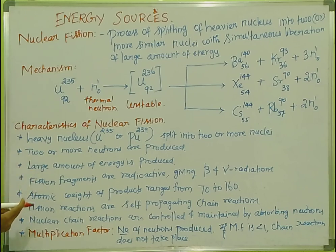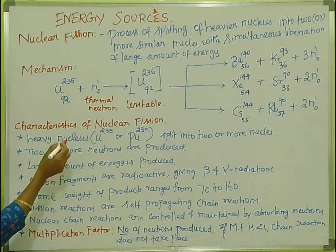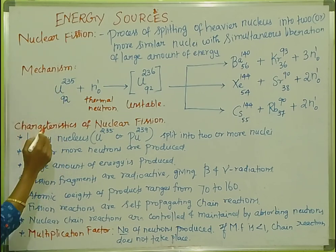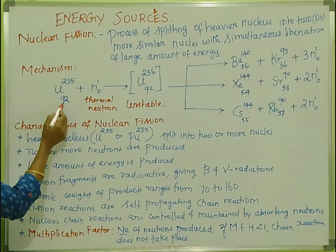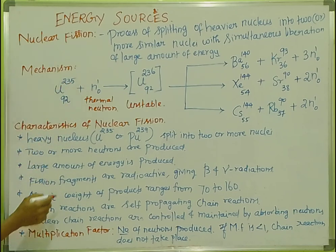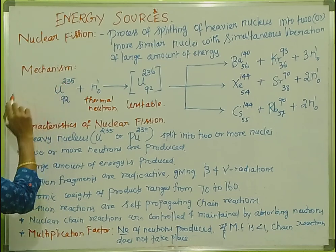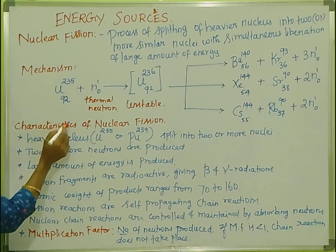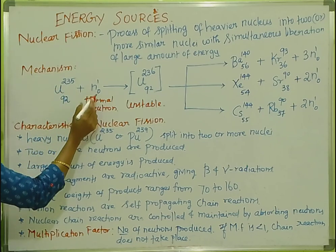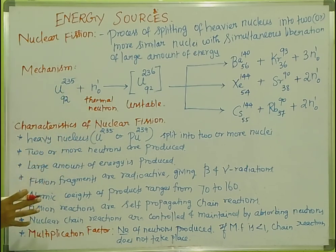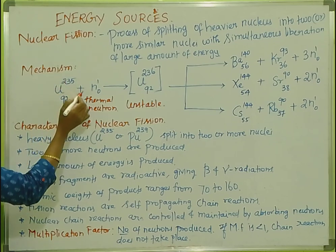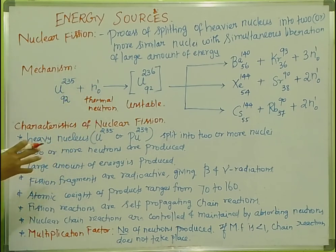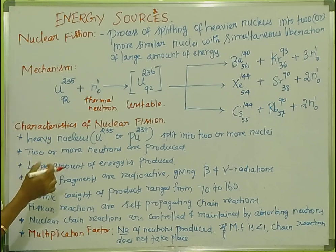The mechanism of the reaction: the nucleus is uranium-92-235 — that is the mass number. Uranium-235 is bombarded with a thermal neutron — it is a bombardment.